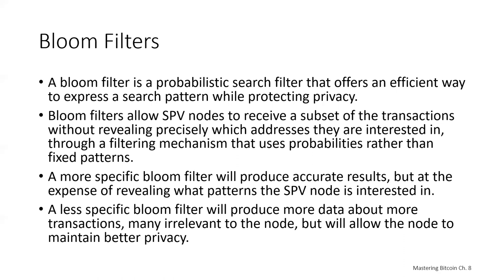Bloom filters serve this function by allowing an SPV node to specify a search pattern for transactions that can be tuned towards precision or privacy. A more specific bloom filter will provide accurate results but at the expense of revealing what patterns the SPV node is interested in, thus revealing the addresses owned by the user's wallet. A less specific bloom filter will return more data about more transactions but allow the node to maintain better privacy.